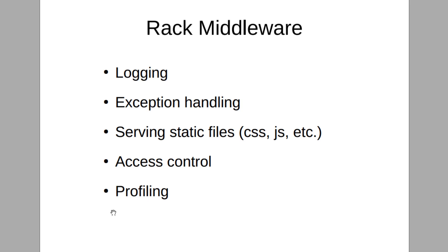As you can see, Rack is very useful. It allows you to change components — meaning you can switch from Puma to Unicorn to Passenger and everything will still work fine. You don't have to change anything in your Rails application because Rails and the web server are not directly tied together. You also get middleware, and you can write your own middleware if you want — all because Rack sits in the middle as the interface between the web server and the web framework.